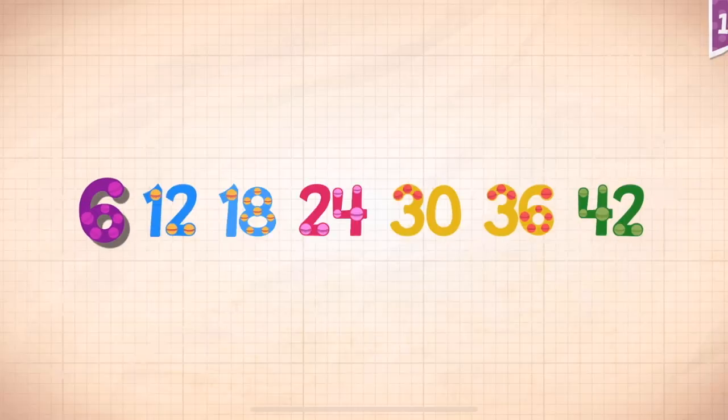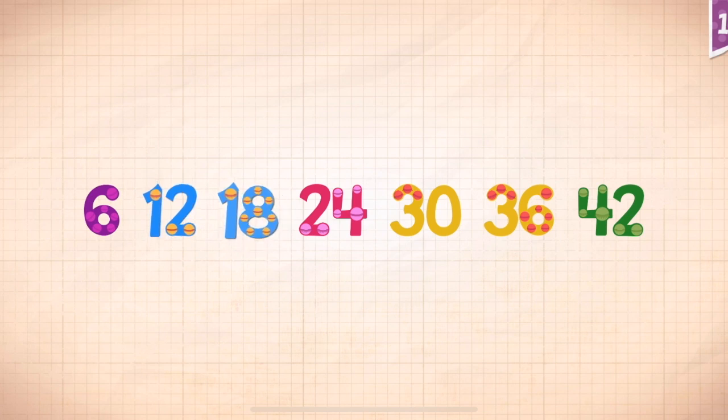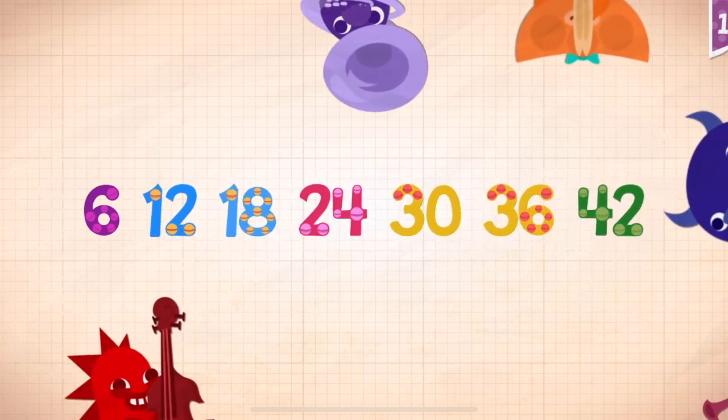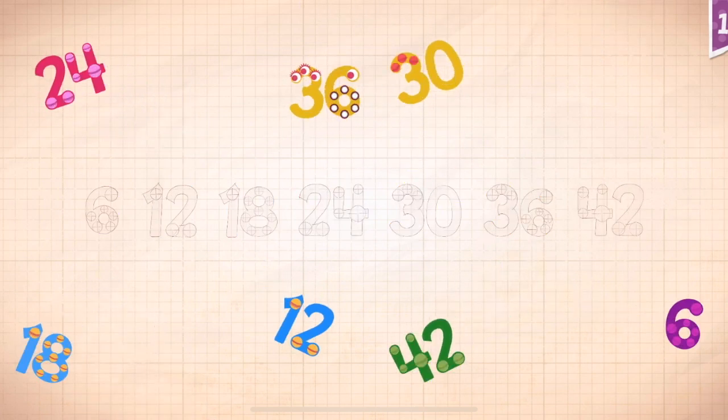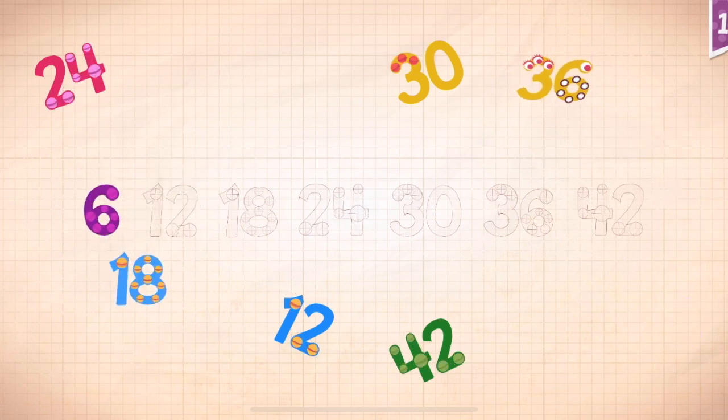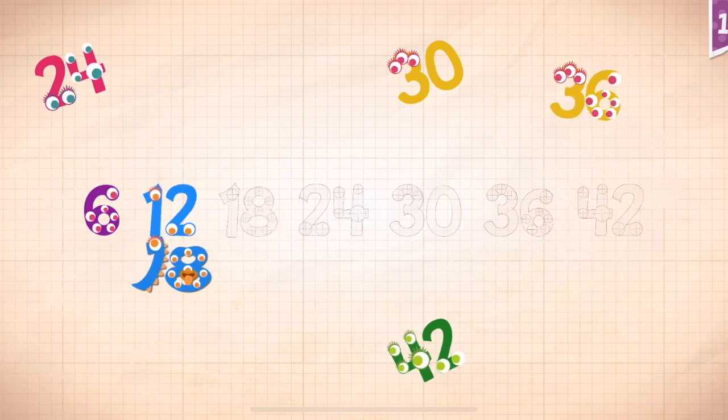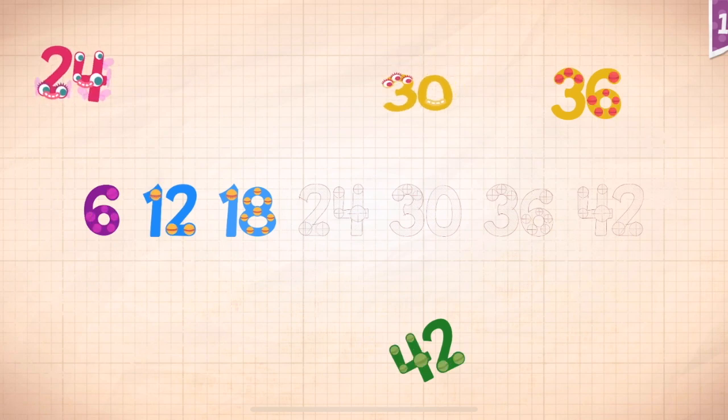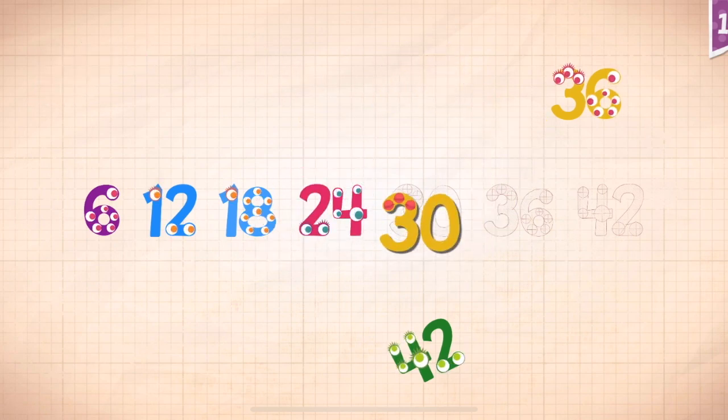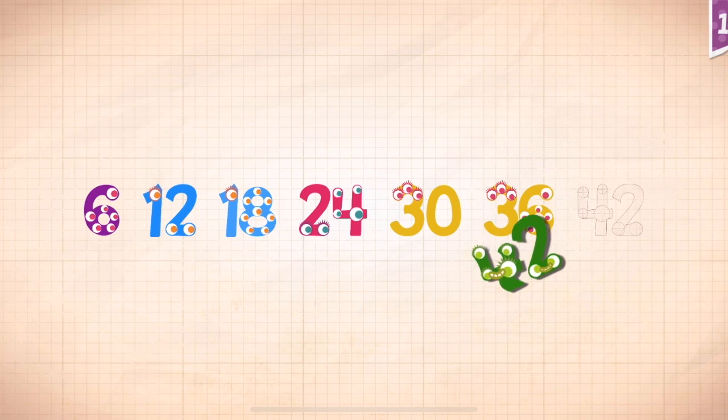Count by sixes. 6, 12, 18, 24, 30, 36, 42. 6, 12, 18, 24, 30, 36, 42.